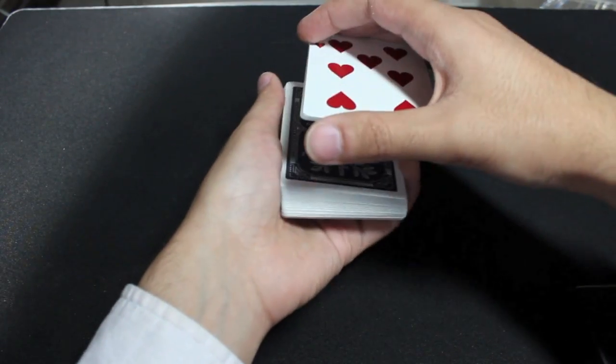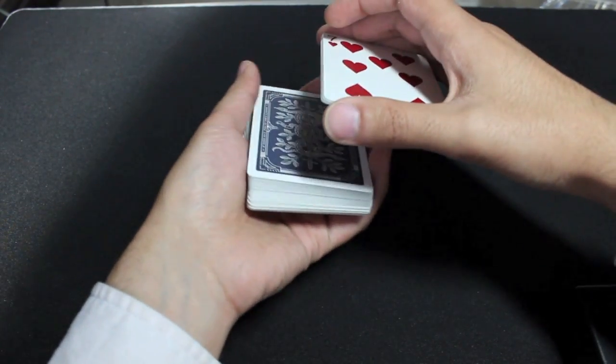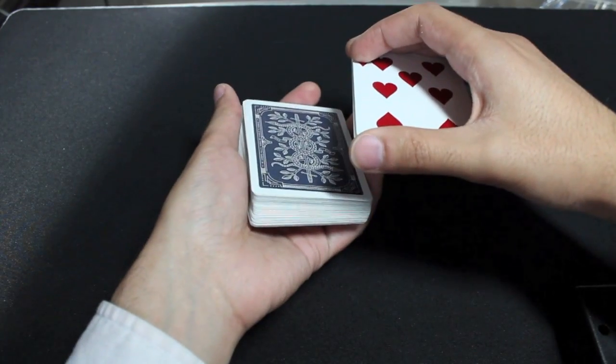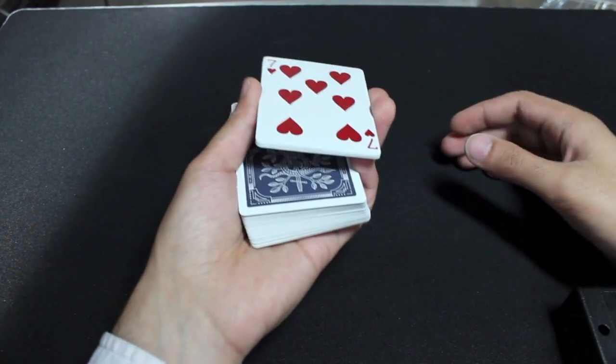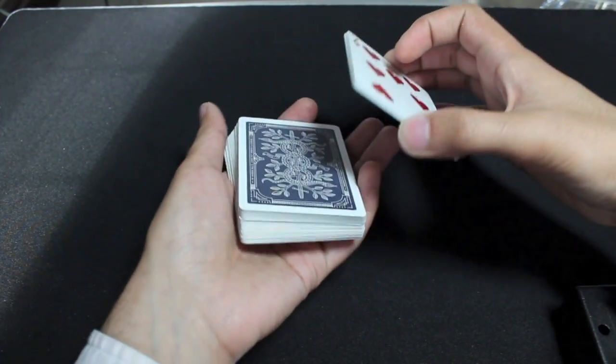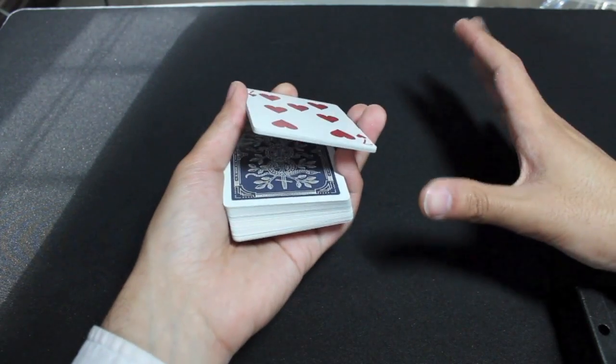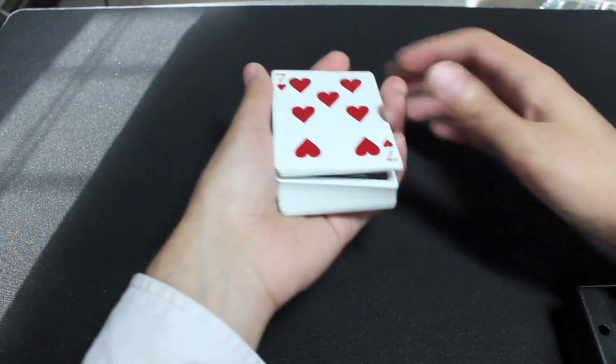So what you're going to do is lift up on all of those eight cards, the eight card packet. Now some of you might be slightly nervous about holding eight cards as four cards. But don't worry about it because it's perfectly covered. Here's how I hold the packet.